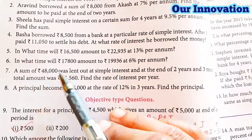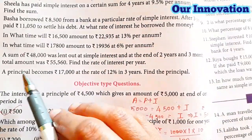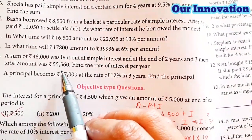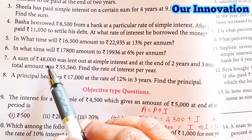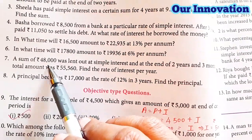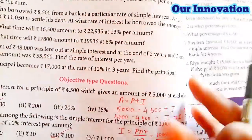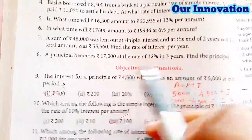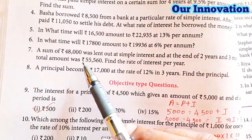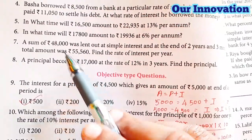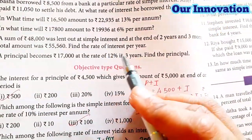Problem 7: A sum of ₹48,000 was lent out at simple interest, and at the end of 2 years and 3 months the total amount was ₹55,560. Find the rate of interest per year. So the principal is ₹48,000, n is 2 years 3 months, amount is ₹55,560, and we need to find the rate of interest.